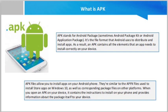APK files allow you to install apps on your Android phone. They are similar to the APPX files used to install store apps on Windows 10, as well as corresponding package files on other platforms. When you open an APK on your device, it contains the instructions to install on your phone and provides information about the package itself to your device.